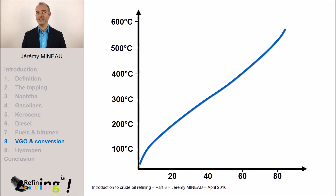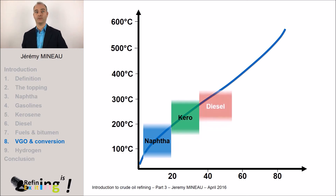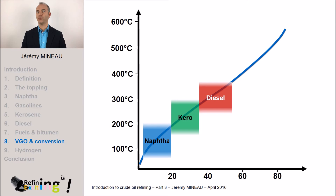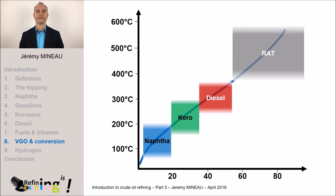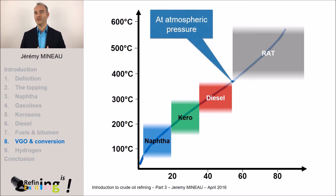Remember this distillation curve of the crude oil? We recovered the naphtha, the kerosene, and the diesel fuel, but we stop here. As you can see, the atmospheric residue represents approximately 50% of the crude oil. If we want to go further, it will be necessary to separate the molecules of the atmospheric residue. The boiling point depends upon pressure — if we lower the pressure, this curve is going to move down.